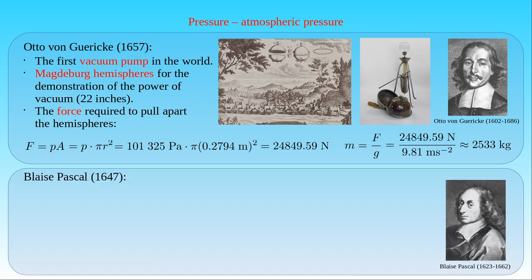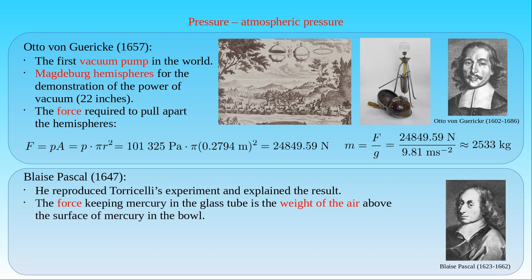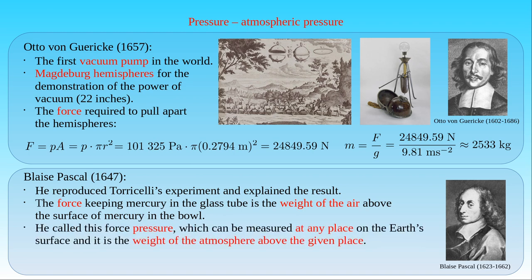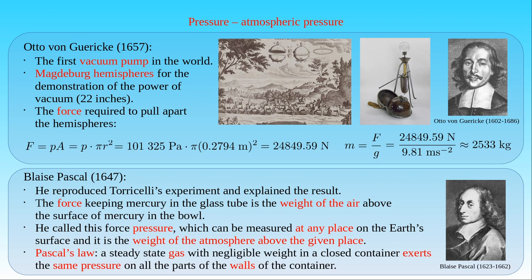Blaise Pascal, a French mathematician, physicist and philosopher, also learned of Torricelli's experiment with the vacuum and reproduced it in 1647. Pascal wanted to understand what force keeps mercury below the vacuum in the tube. Like Beeckman almost 20 years earlier, he came to the idea that the force which keeps the mercury column at 760 millimeters is the weight of the air above the surface of mercury in the bowl. He predicted that the height of the column would decrease on top of a mountain, which he proved with experiments at the mountain Puy-de-Dôme in central France. From the decrease he could calculate the weight of the air, and stated that this force measured at any place on the earth's surface is the weight of the atmosphere above the given place. Pascal called this force pressure, and he claimed that it is acting uniformly in all directions. This is Pascal's law: a steady-state gas with negligible weight in a closed container exerts the same pressure on all parts of the walls of the container.